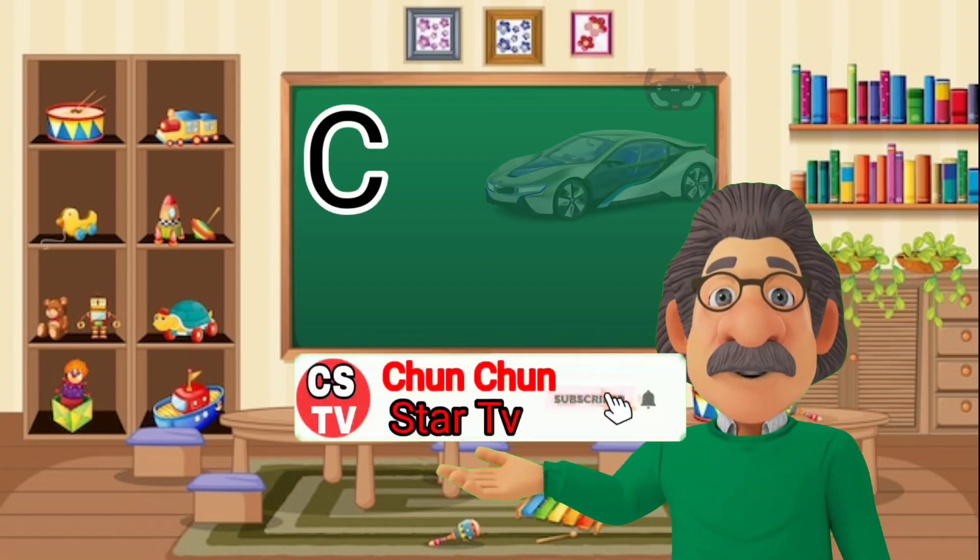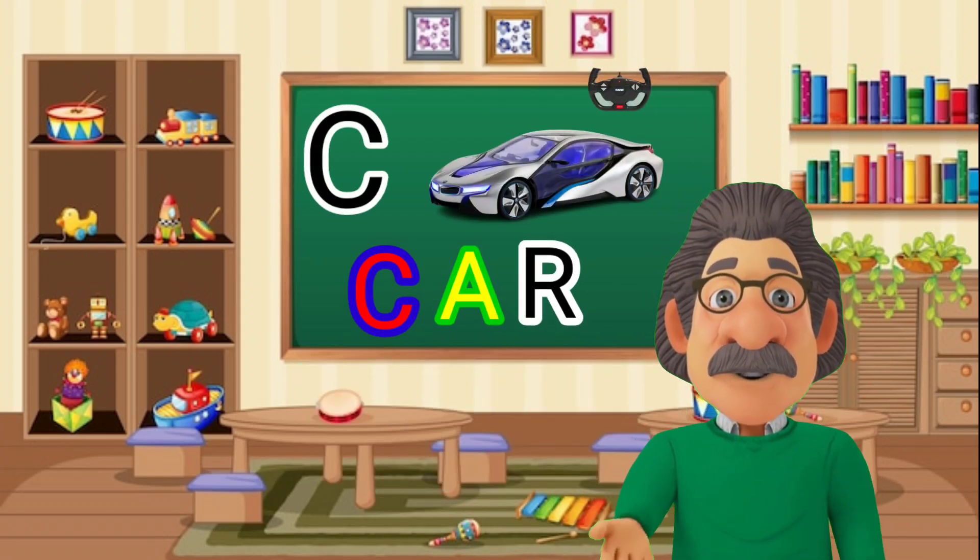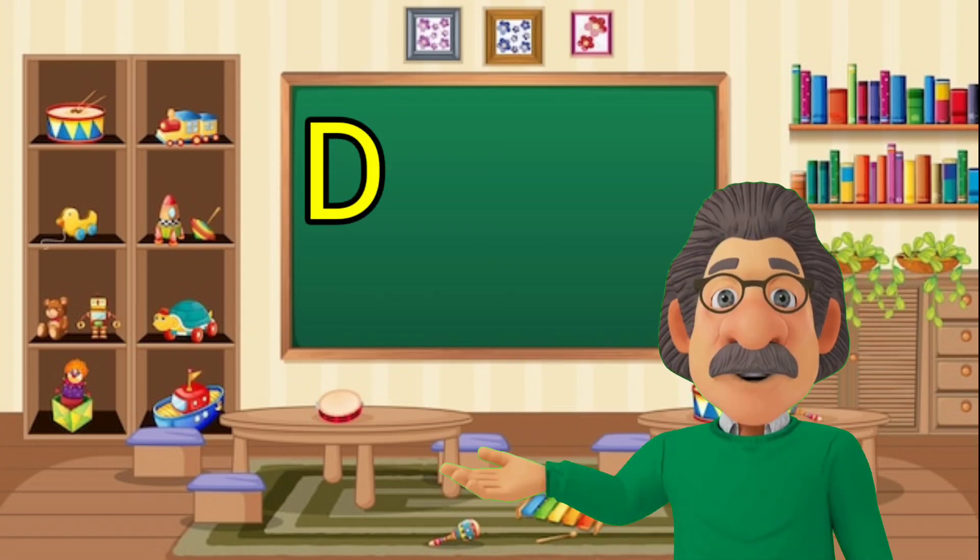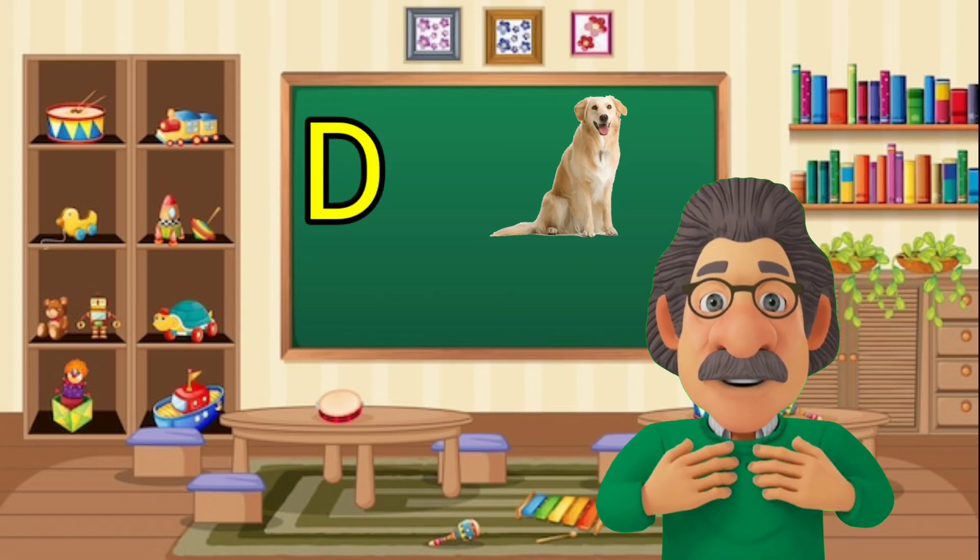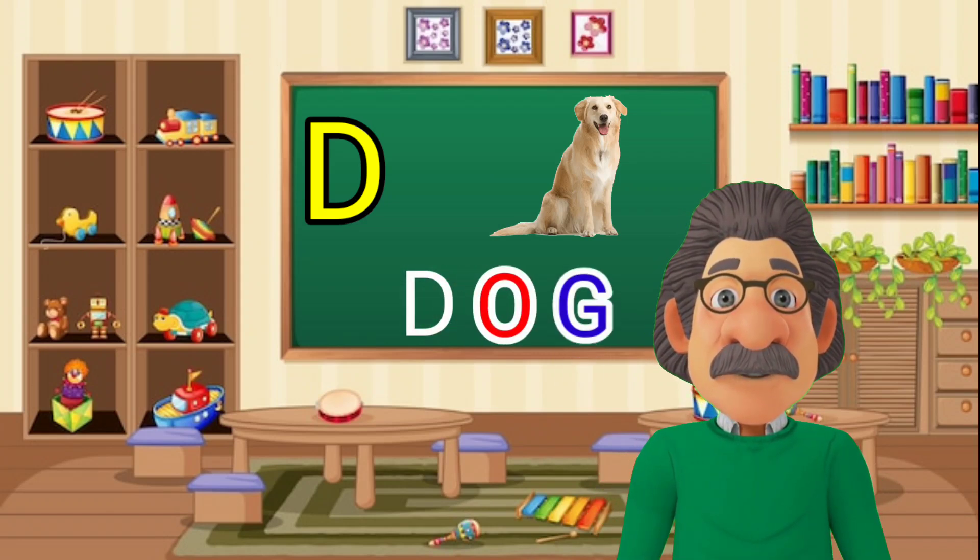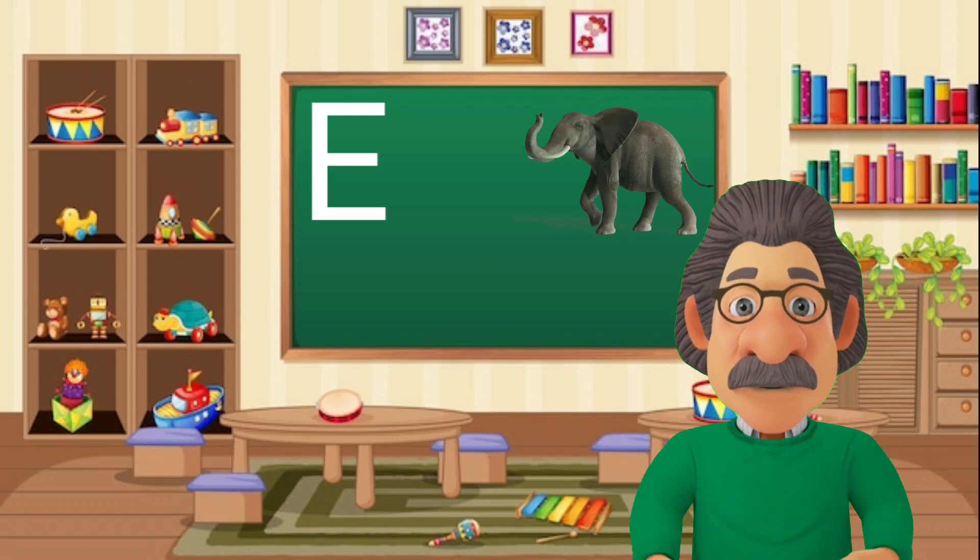C for car, C-A-R, car. D, D for dog, D-O-G, dog. E, E for elephant.